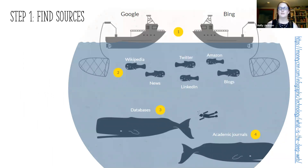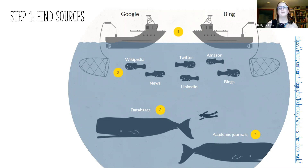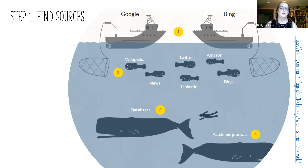A lot of these you'll probably find through the library's website. Many people are tempted to start with Google, and that's not necessarily a bad thing. But as you can see in this image, Google and any internet search engine only have access to what we call the surface web — just the top layer of that ocean of information. To get to databases and academic journals, things that require a login — your Mansfield email address and password — you need to go a little deeper than just Google.